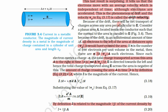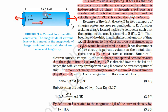Because of the drift, there will be net transport of charges across the area perpendicular to E. Charges are transported from the left side to the right side, opposite to the electric field, because the charge carriers are negative. Consider a planar area A located inside the conductor such that the normal to the area is parallel or anti-parallel to E.